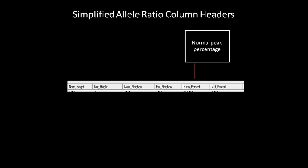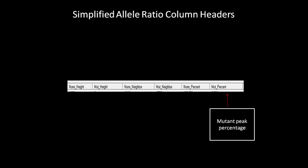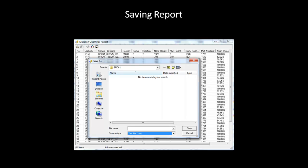The fifth column displays the percentage of the normal allele present. The last column displays the percentage of the mutant allele that was detected. For a heterozygous variation, it can range anywhere from 40 to 60%. The saving function is the same for both standardized and simplified allele ratio — click on the save icon button in the toolbar to save the report as a text file.